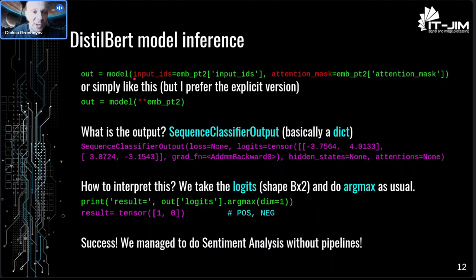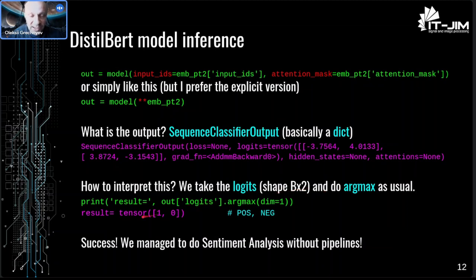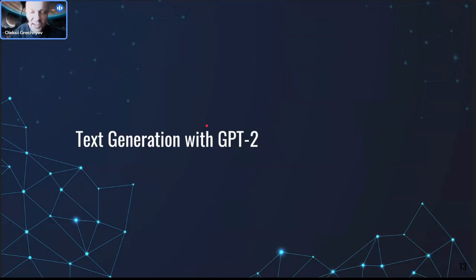Now we can finally send our tensors to the model. You call the model with arguments 'input_ids' and 'attention_mask' - the names are the same as the dictionary keys, so you can use Python's double-asterisk syntax, but I prefer the explicit syntax as more readable. The output is a 'SequenceClassifierOutput' object - basically a dict - which contains several keys including logits, a tensor of shape B×2 where B is batch size. From the name 'logits' you can probably guess what to do: take argmax over the second axis and you get predictions - sentence 1 positive, sentence 2 negative - which is the correct classification. We succeeded in classifying text without using pipelines, using only the model.